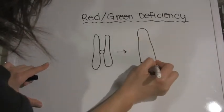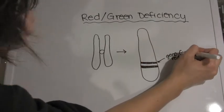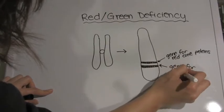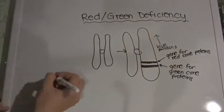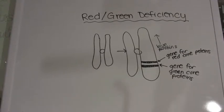Now that we know how color vision works, we can understand how colorblindness occurs. The most common case is red-green deficiency. This is so common because the genes for the red and green proteins are very close together on the X chromosome.